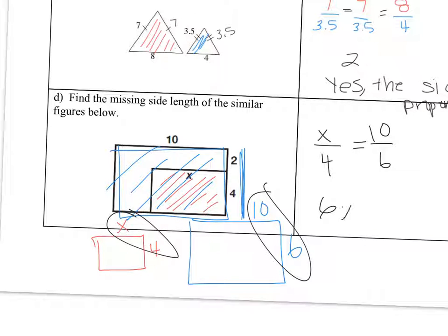So I'm going to write the proportion x is to 4 as 10 is to 6. And cross multiply. So 6x equals 40. x equals 20 thirds. And there's no units, so I'm just going to write 20 thirds.